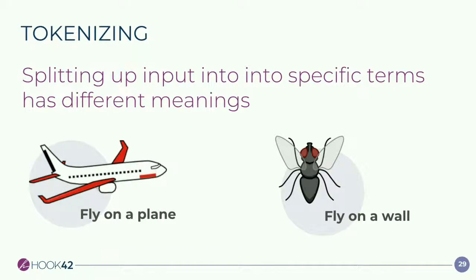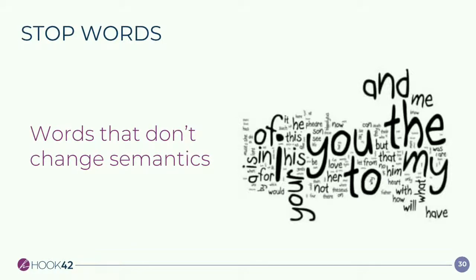A lot of search features consider this idea called tokenizing — you can split up what is searched and try to understand it better in more context. So if someone types 'fly on a plane,' you have a specific semantic, or 'fly on a wall' implies a bug. Having those tokens to split up different words helps achieve semantics. Another thing you can do is strip out stop words — words that don't really add value to the semantics, like 'of,' 'the,' or 'my.' They're dead words. Stop words are critical because they don't add to the semantics, so you can strip them out.